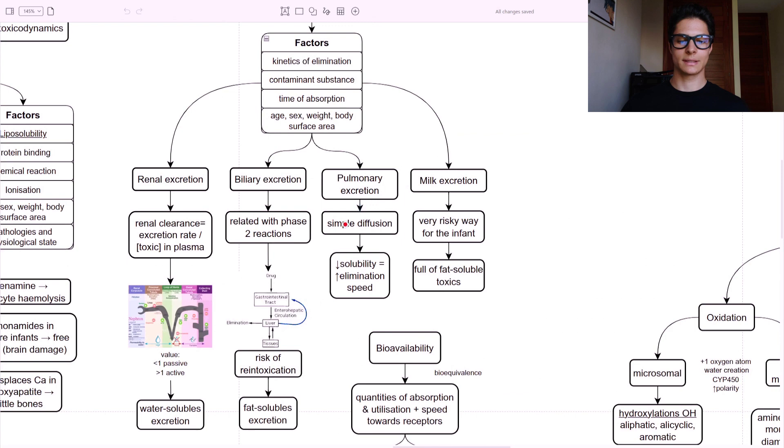Pulmonary excretion - it's a simple diffusion. Lower solubility, higher elimination speed. And also breast milk excretion. Be careful with that. It's a very risky way for the infant. And it is full of fat-soluble toxins, which are the worst ones.